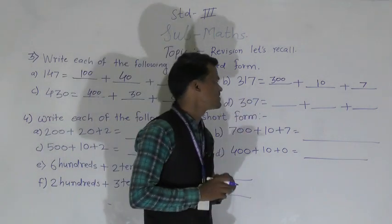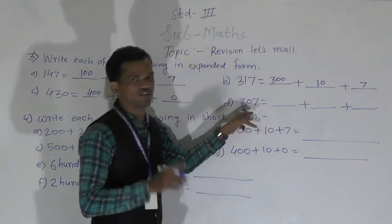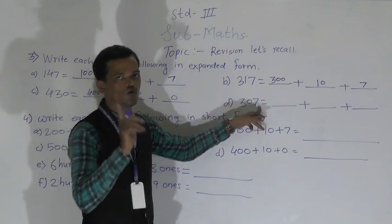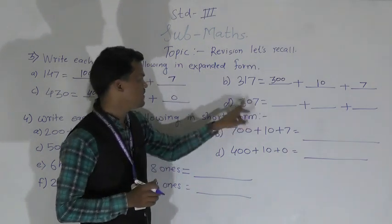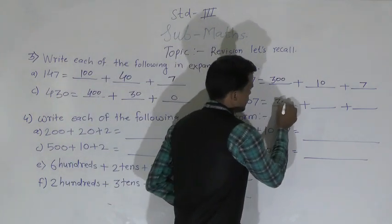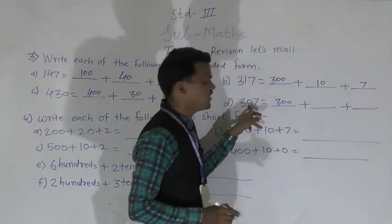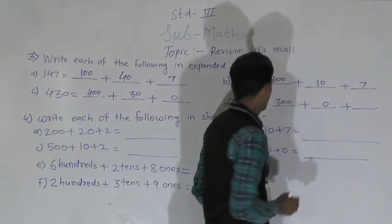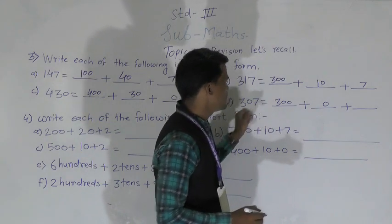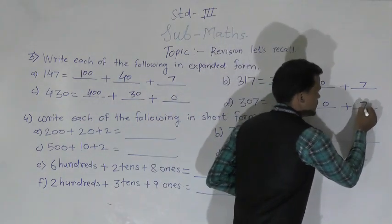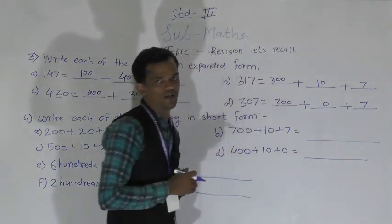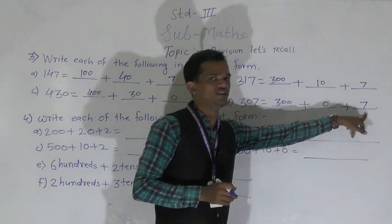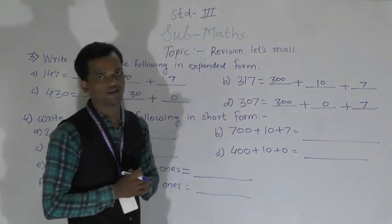Next number: 307. 3 comes at the hundreds place, 0 comes at the tens place, and 7 comes at the ones place. The place value of 3 is 300. 0 at tens place is always 0. And the place value of 7 is 7. So 307 = 300 + 0 + 7. This is the expanded form of 307.